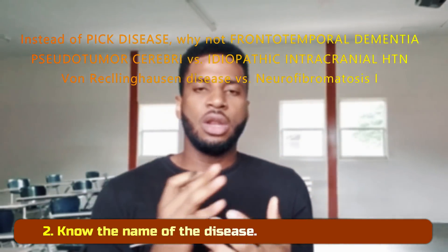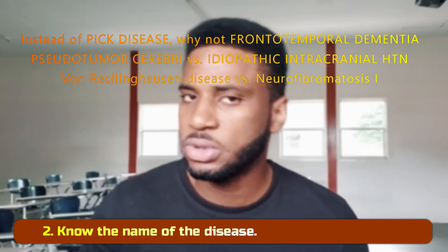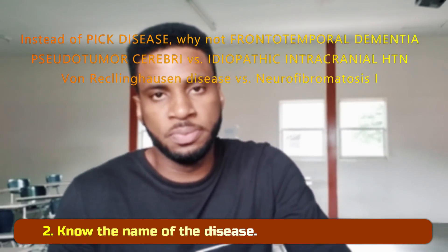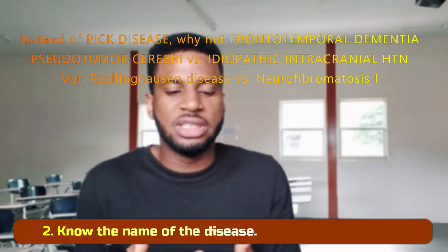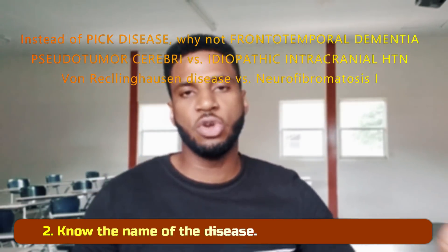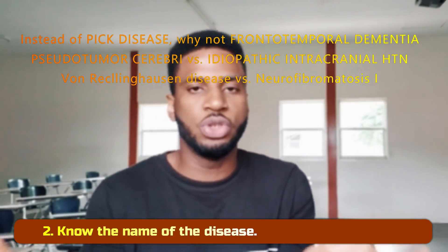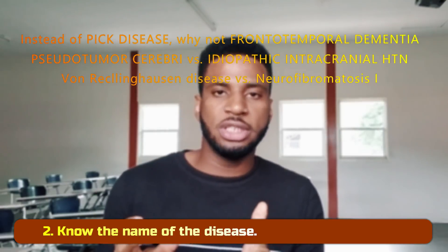The second thing I'm going to ask you to do is to know the name of the disease. A lot of students learn big names that provide little information. For example, von Recklinghausen disease sounds sophisticated, but it doesn't help much. But if I say neurofibromatosis type one, that name tells me something about the disease. Similarly, if I say pseudotumor cerebri versus idiopathic intracranial hypertension — which one provides you information about what the disease is about? Choose names, especially among alternatives, that provide information about the pathophysiology.